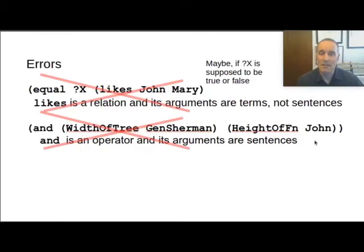So here are some possibilities for errors of violating these particular constraints. So if somebody tries to write equal x likes John Mary, well, likes is a relation. Its arguments are terms. They're not sentences. Likes, however, is a sentence, and we're assigning, in this case, the truth value of that sentence to x. Now, you're not allowed to do that in first-order logic. There are classical or even non-classical higher-order logics where you can do that. You can assign a truth value to a variable. But at least for first-order logic, you're not allowed to do that.